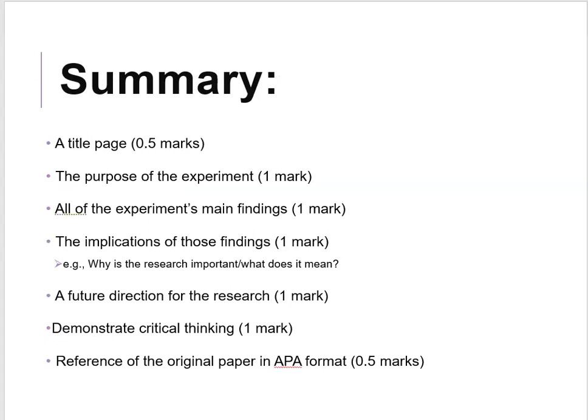So the summary itself — this is exactly what I'm going to be grading you on, so you can see where you're going to get marks and where you might lose marks. You're going to get half a mark for your title page. You'll get one mark for just telling me what is the purpose of the experiment — why did the authors run this experiment? And then you're going to tell me what the results are or what are the main findings. There can be multiple findings. There are two papers you can choose from; one has a little bit more findings than the other. Either way, you get one mark for putting all of the main findings.